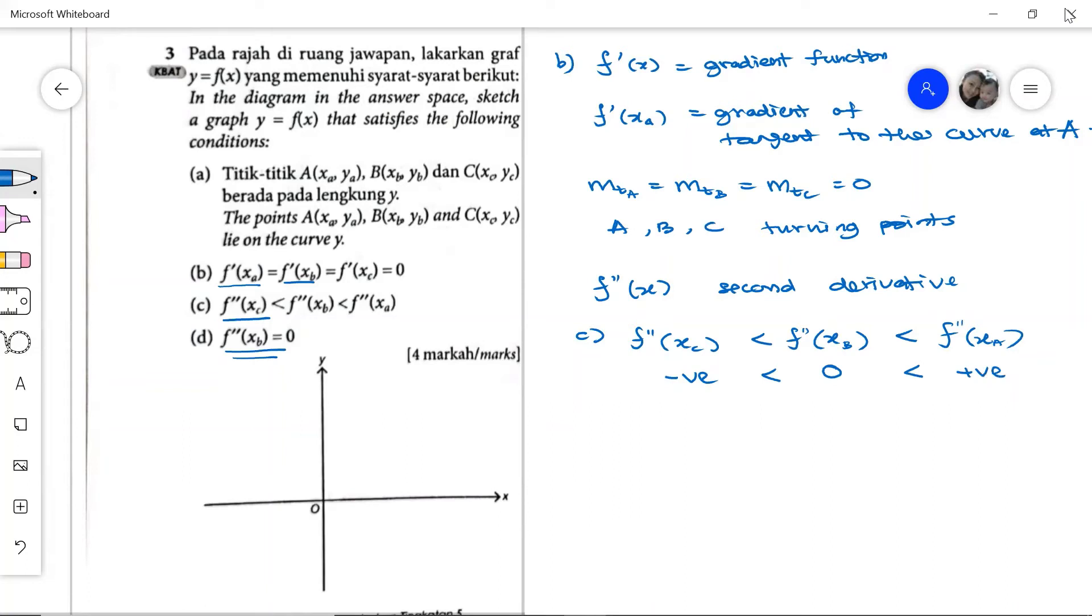So when it is negative value, we know that it is the sad face graph. So we have the maximum point. C is the maximum point. And when we have a positive value of second derivative, it is the smiling face. And therefore, point a will be our minimum. When our second derivative equals zero, we have the inflection point. So point b is point of inflection.